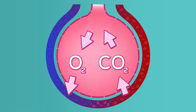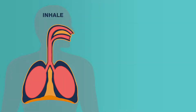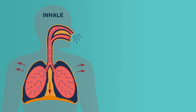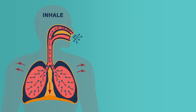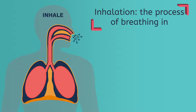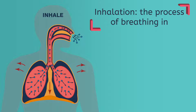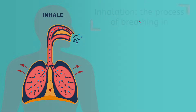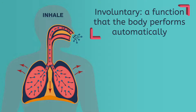To begin the respiratory system process, we breathe in air, which is just over 20% oxygen, through our nose or mouth down toward the lungs. This process is called inhalation. To inhale, we can make the active decision to breathe in at any time, but this is mostly involuntary, meaning the body does it automatically.